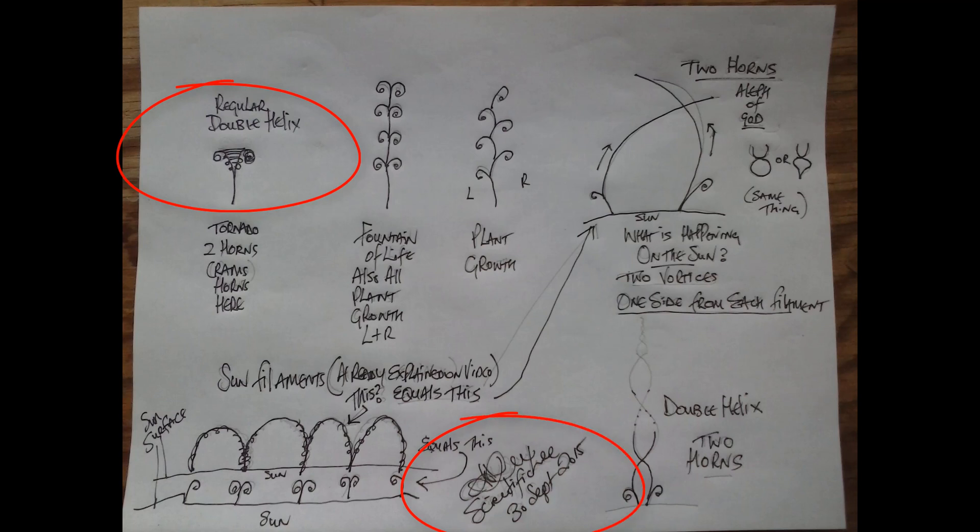Top left picture shows a regular double helix, which is basically a tornado with two horns—counterclockwise on the left and clockwise on the right. Here it's shown as the ram's horns. You've got the fountain of life and all plank growth and the LF of God and some filament explosions, which is made from two leaders. Magnetic fields are like fingers, double helix fingers that stick out of a magnet.